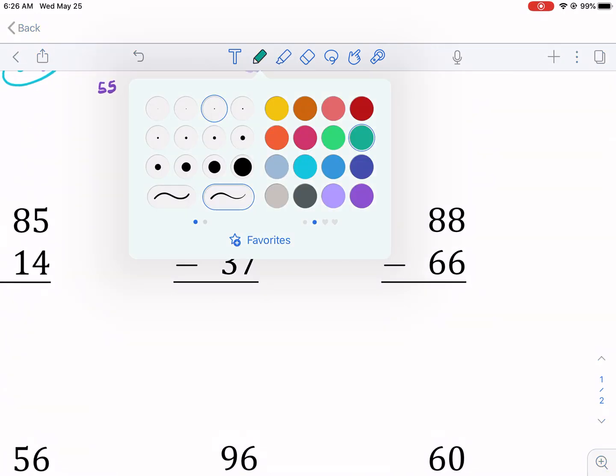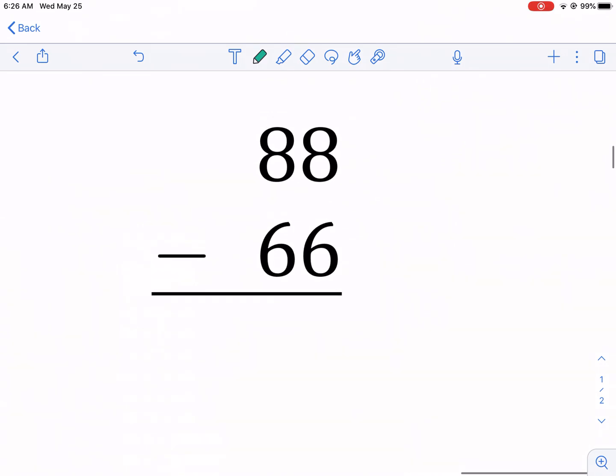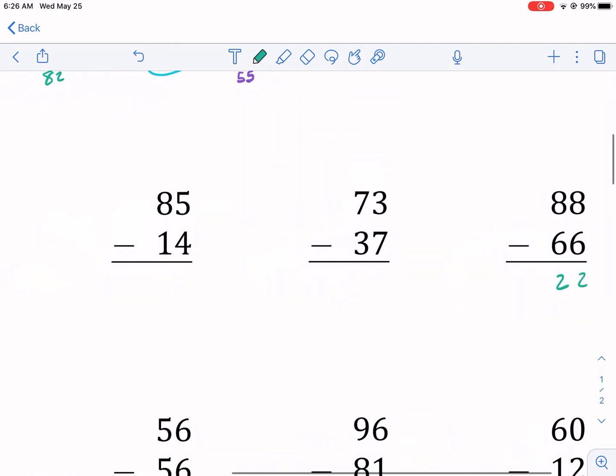These ones, of course, when I have just the number on top always bigger than the number on the bottom, super easy. 8 minus 6, 8 minus 6, 22 is my answer there.